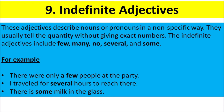Indefinite Adjectives. These adjectives describe nouns or pronouns in a non-specific way. They usually tell the quantity without giving exact numbers. The indefinite adjectives include few, many, no, several, and some. For example, There were only a few people at the party. I traveled for several hours to reach there. There is some milk in the glass.